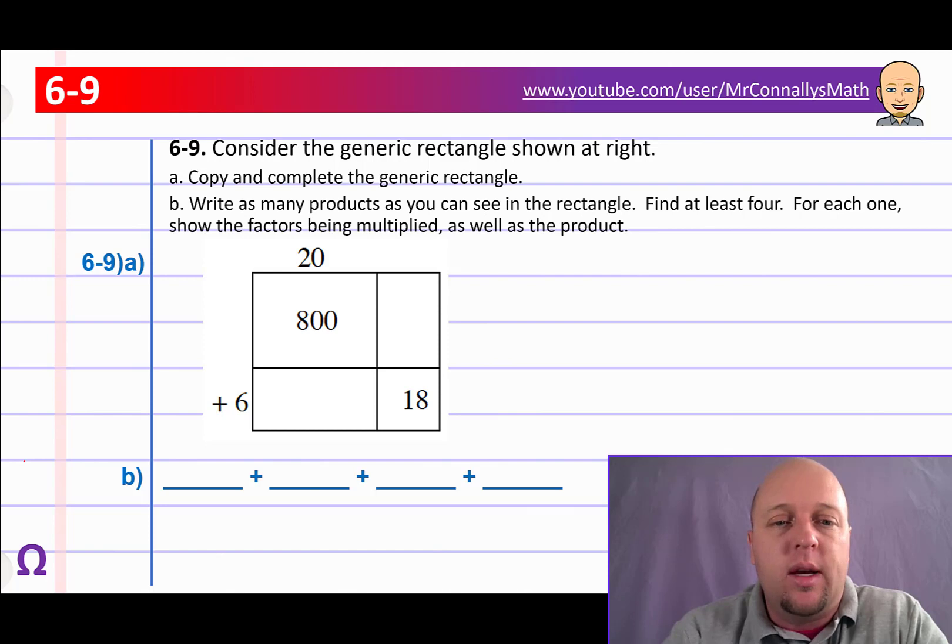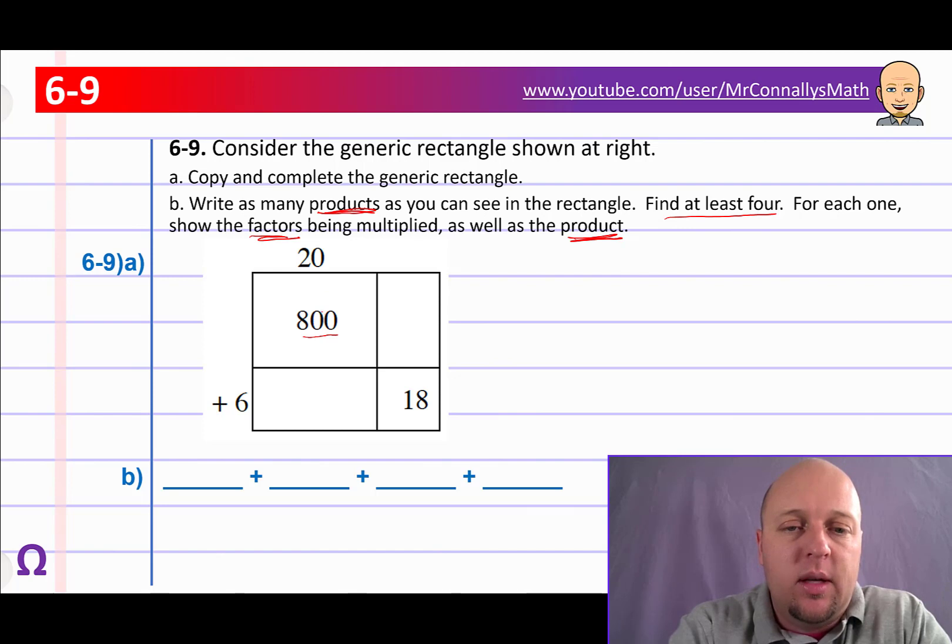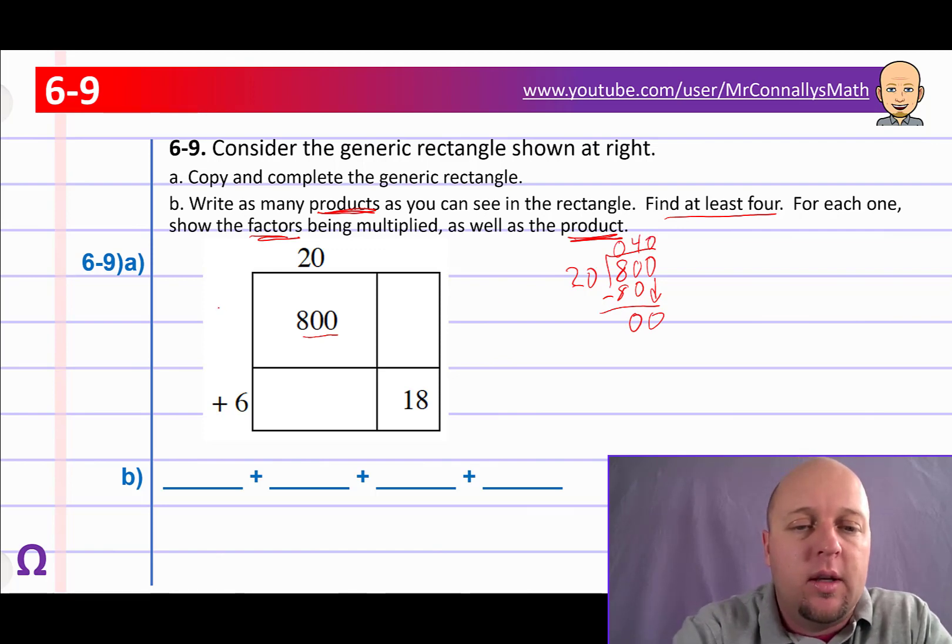6-9. Consider the generic rectangle shown at right. Copy and complete the generic rectangle. Write as many products as you can see in the rectangle. And find at least 4. For each one, show the factors being multiplied as well as the product. Okay. So remember, the products are answers to multiplication problems and factors are the numbers that you multiply to get an answer. Okay. So this one, we've got a product. We've got 800. How do we get 800? We're going to take 20 and multiply it by another factor to get 800. So to do that, let's work backwards. We've got 800. And let's divide it by 20. So 20 goes into 80. 8 zero times. And then 80, 4 times. So 4 times 0 is 0. 4 times 2 is 8. Subtract that. We get 0. Bring down the 0 again. Oh, 20 doesn't go into 0. So it's 0 times the answer would be 40. So we put 40 over here.